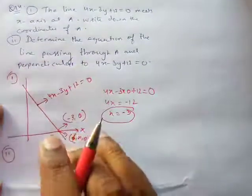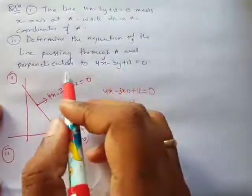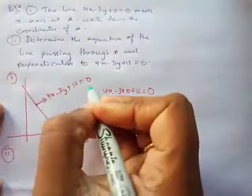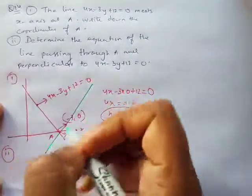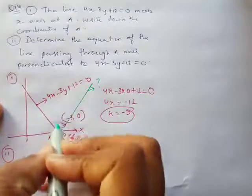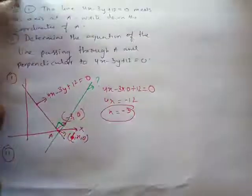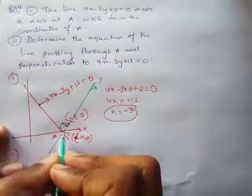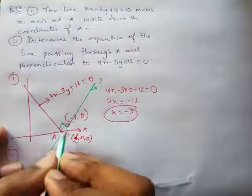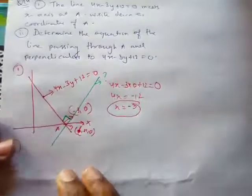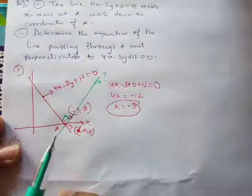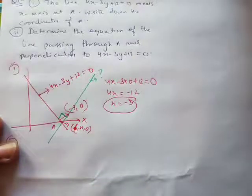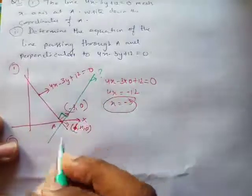The second part says: determine the equation of a line passing through A and perpendicular to this line. I'll draw the new line with a different pen — this line passes through the same point A, which is (-3, 0), and makes a 90-degree angle with the original line. I have to find the equation of this new line.